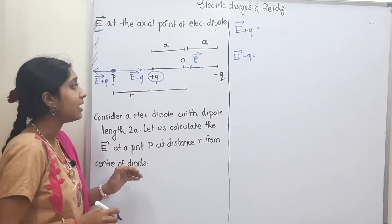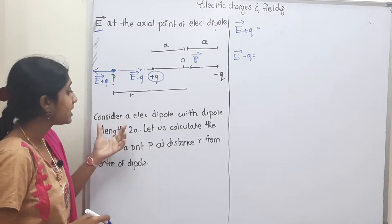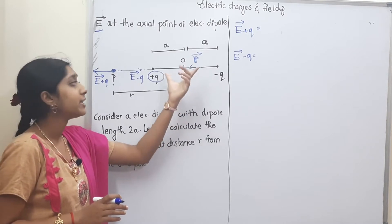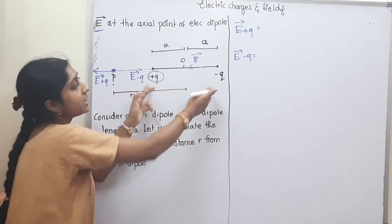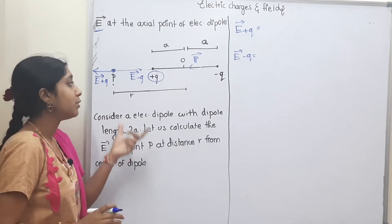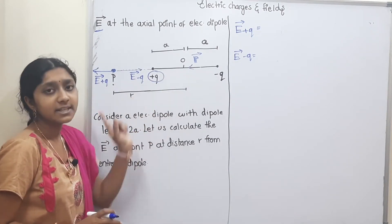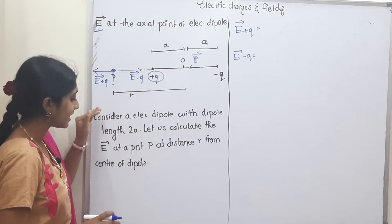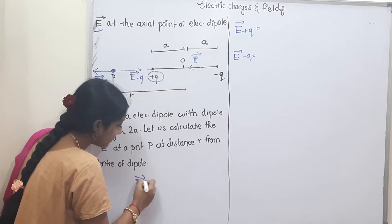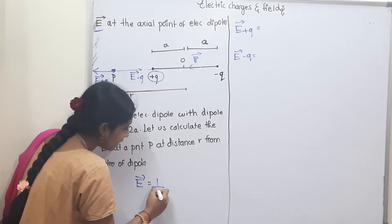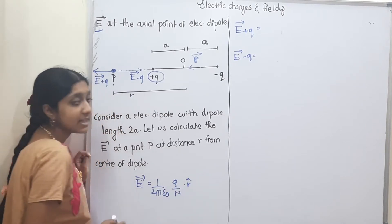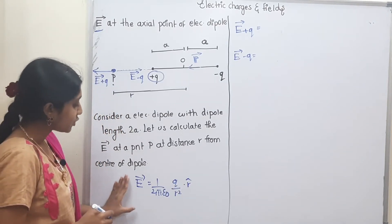We will now set up the derivation. We consider a dipole with length 2a — that is the distance of separation. We will calculate the electric field at point P, which is at distance r from the center of the dipole. The general formula for electric field is: E = 1/(4πε₀) × Q/r² × r̂. This is the base formula.